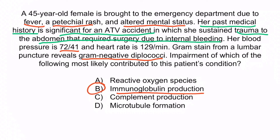A is incorrect because impaired synthesis of reactive oxygen species increases the susceptibility to catalase-positive organisms, not to encapsulated organisms. C is incorrect because the spleen is not the site of complement production — the liver is. Therefore, complement production in this patient is likely intact. D is incorrect because impaired microtubule formation is not a known contributing factor to Neisseria meningitidis infections; this mechanism is most commonly associated with certain drugs, for example chemotherapeutic drugs. And with that, we've covered everything you need to know about Neisseria meningitidis.